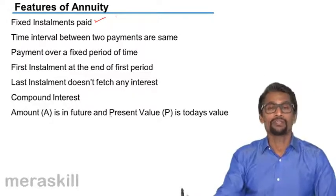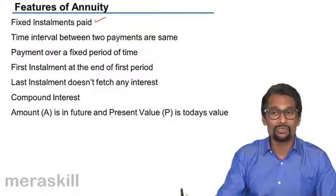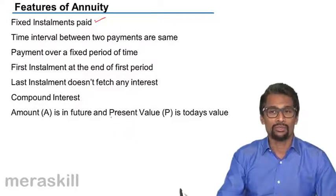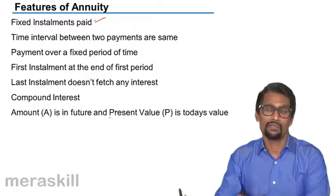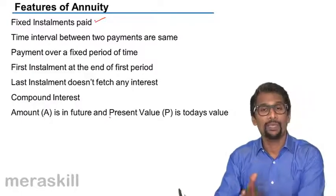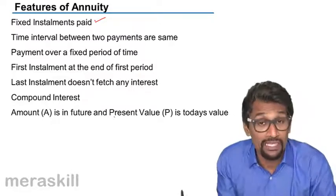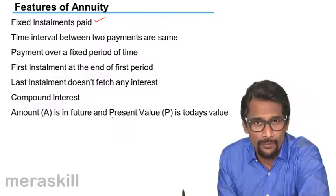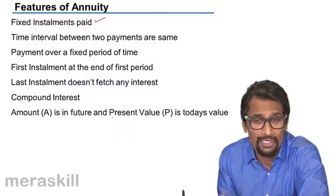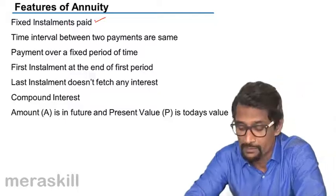It's not as if in the first year you deposit 10,000, the second year you deposit 12,000, the third year you deposit 13,000 — that is not called an annuity. You need to deposit the same amount of money every period. The end of every period could be the end of one year or the end of one month, but the amount you're going to be paying or depositing is going to be fixed.